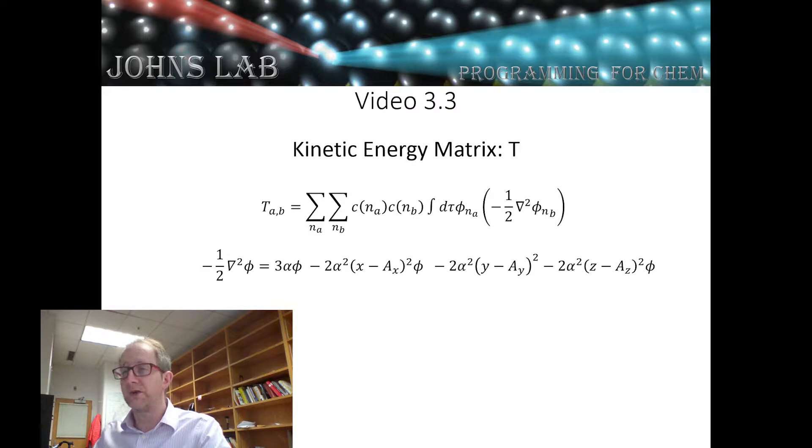Now we can evaluate these integrals, and we're going to split this up into two parts. First, we evaluate the integral of another primitive Gaussian times this. The integral over all space of phi sub na times three alpha phi sub nb is just three alpha times g overlap of the two primitive Gaussian functions. This is a function we already wrote when we made our overlap matrix, so we're just going to reuse it.